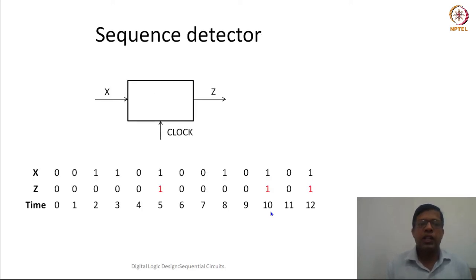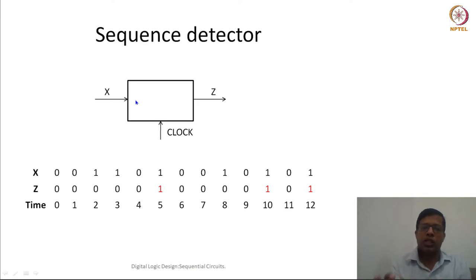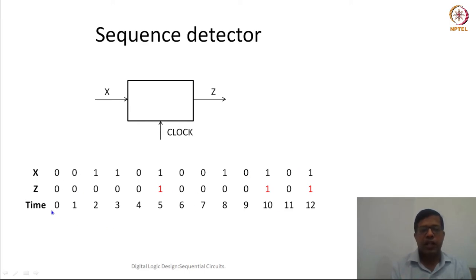The first problem we are going to take is a sequence detector. A sequence detector is a simple circuit where we assume there is a single-bit input coming at one input in one cycle, and there is a single-bit output z. Within this sequence detector, it is trying to detect a particular sequence. Let us say this is the input x and the output z at different times.